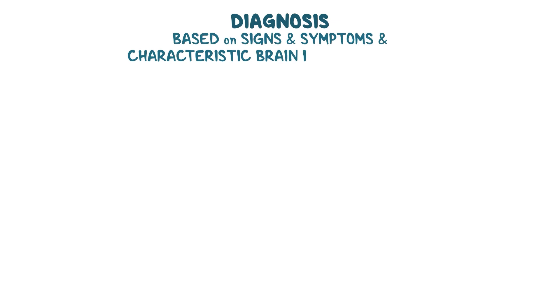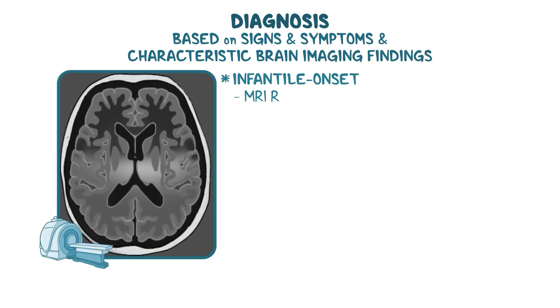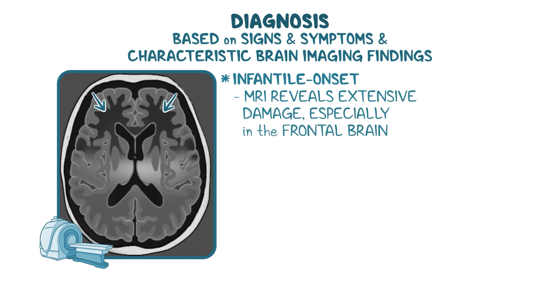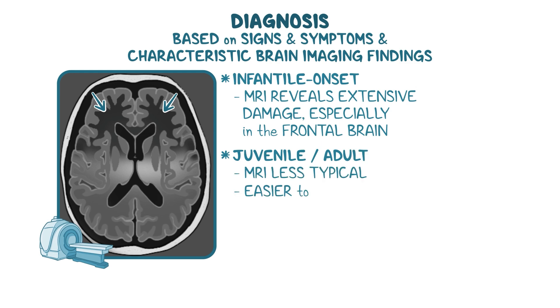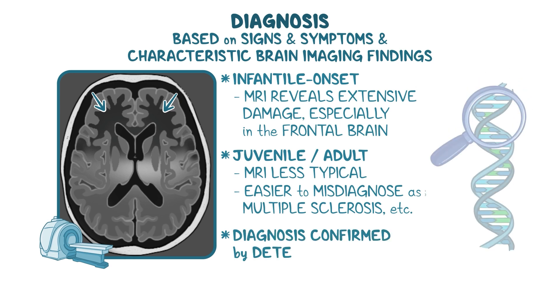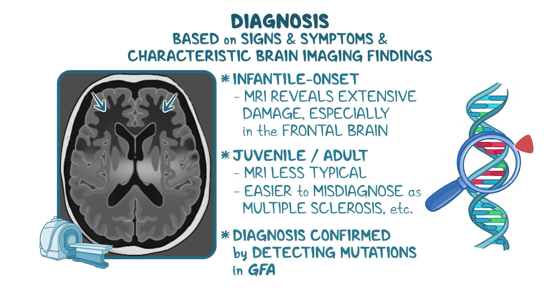Diagnosis of Alexander disease is suspected based on the signs and symptoms and characteristic brain imaging findings. In the infantile onset form, MRI often reveals extensive damage, especially in the frontal part of the brain. In the juvenile and adult onset forms, MRI findings may be less typical, making it easier to misdiagnose the condition as multiple sclerosis or other neurodegenerative disorders. Diagnosis can be confirmed by detecting mutations in the GFAP gene.